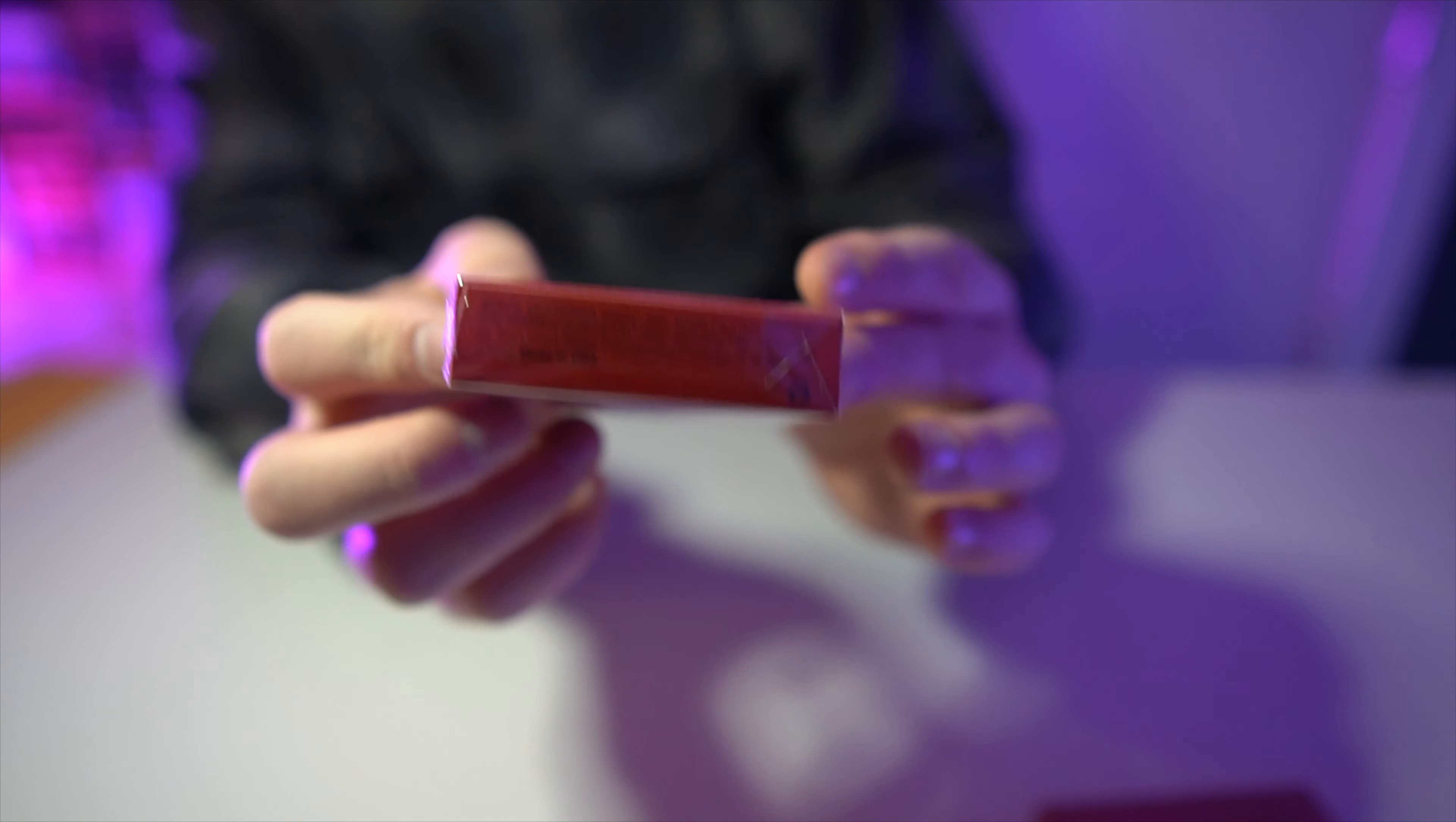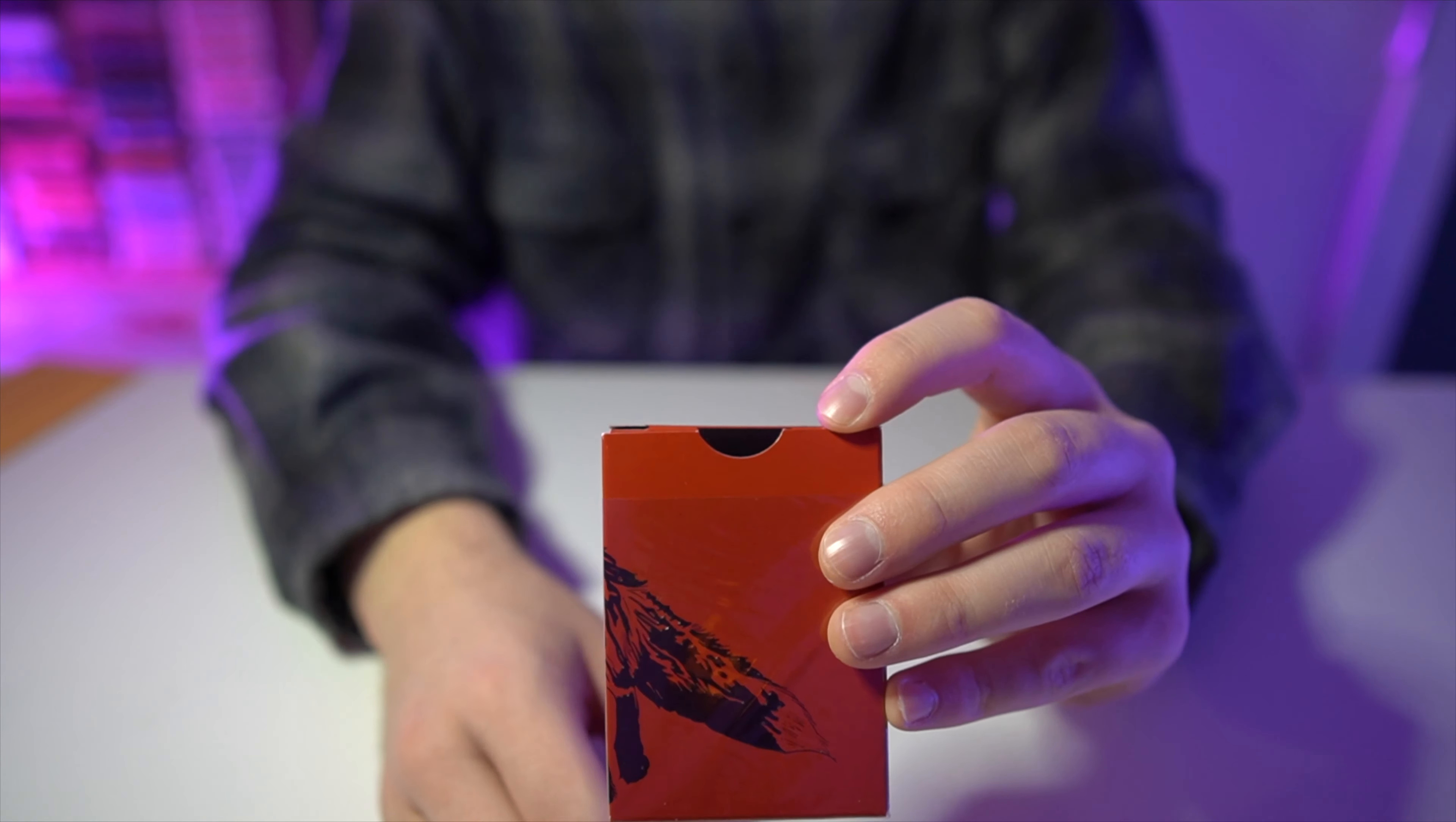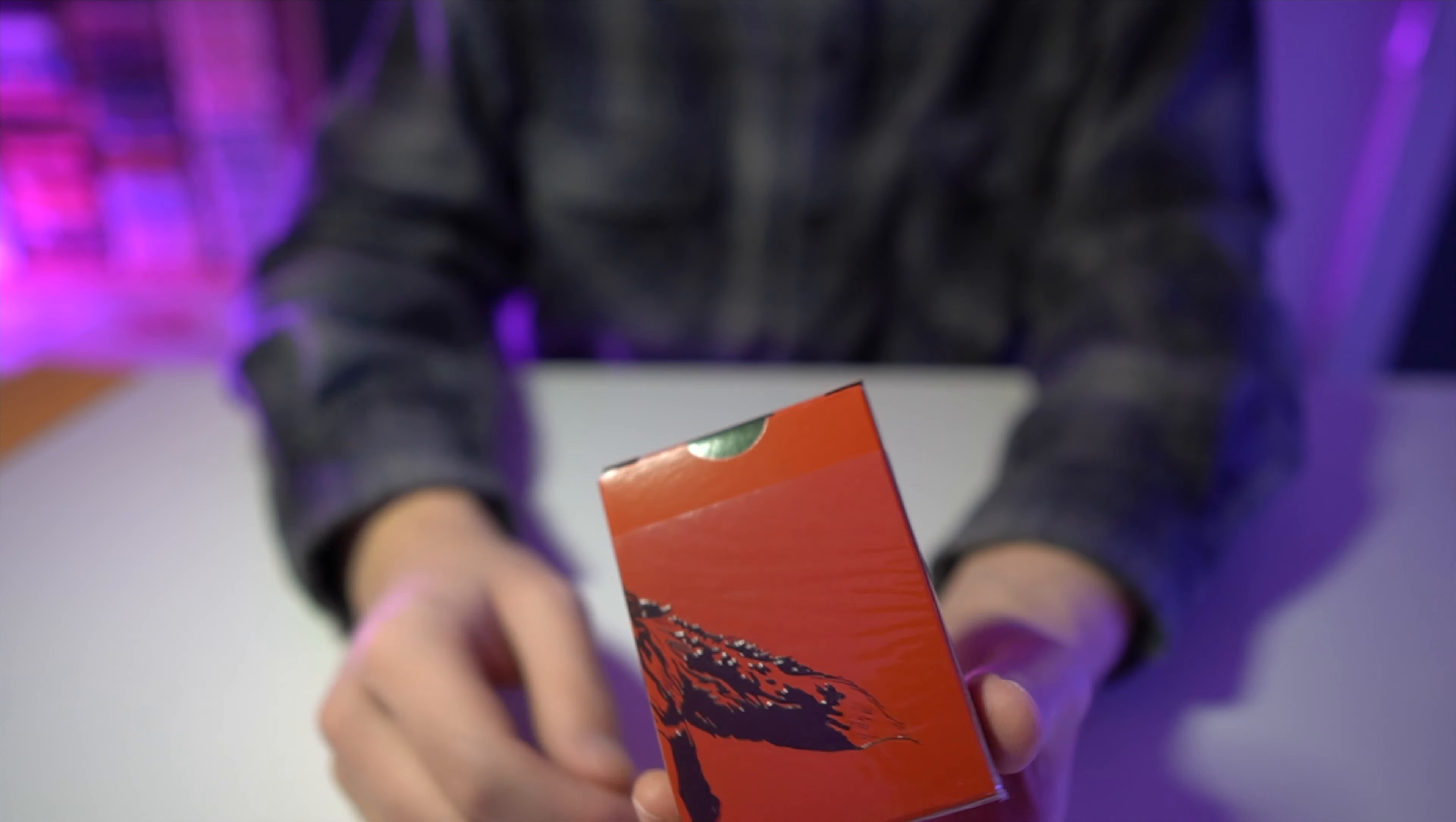On the bottom, you just have regular playing card ad copy. One thing you'll notice about the seal on these cards is there is none. There's no seal, but there is this half moon shape that is black. And I'll give the reason for that in just a second when I open these up.